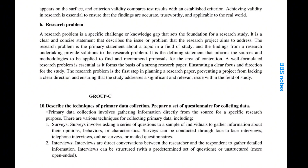Describe the techniques of primary data collection and prepare a set of questionnaire for collecting data. Primary data collection involves gathering information directly from the source for a specific research purpose. There are various techniques including: 1. Surveys — asking a series of questions to a sample of individuals to gather information about their opinions, behaviours or characteristics. Surveys can be conducted through face-to-face interviews, telephone interviews, online surveys or mailed questionnaires.